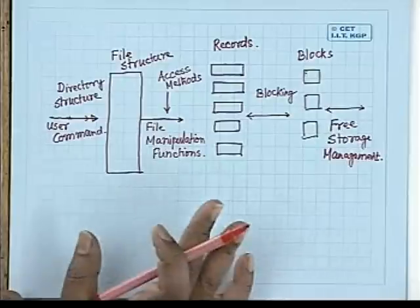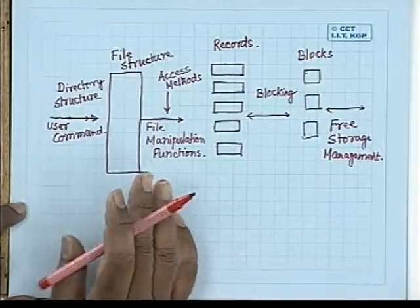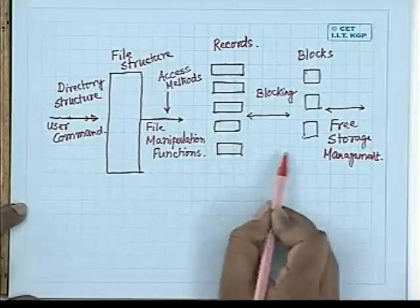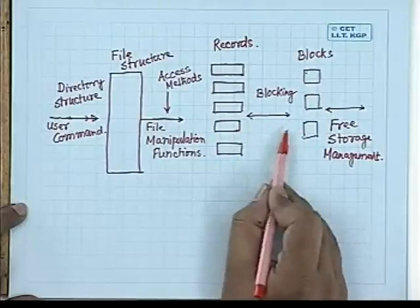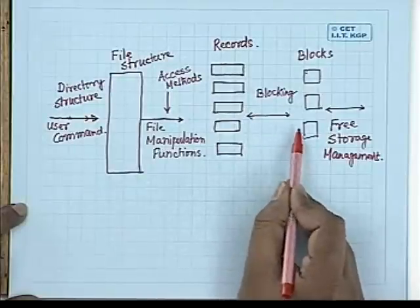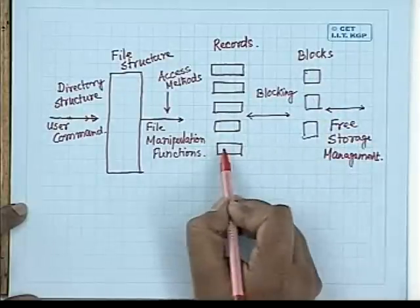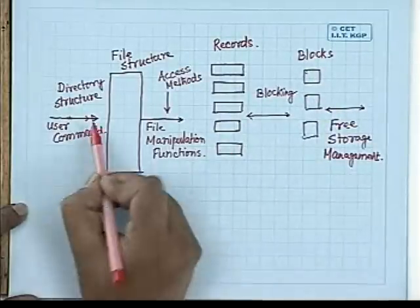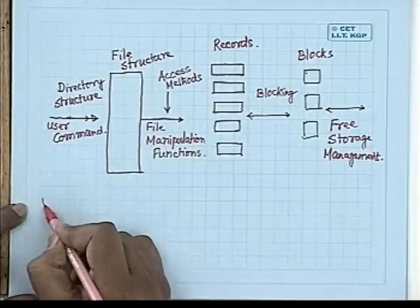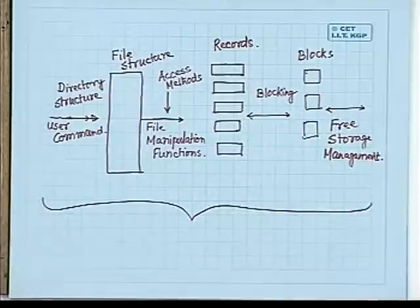What comes in between is the access methods, which break blocks into records, and the blocking method, which combines records into blocks — and the reverse, unblocking. Once you have a block, you should be able to break it into records so that applications can use it. So all the functions related to file system management can be structured this way.